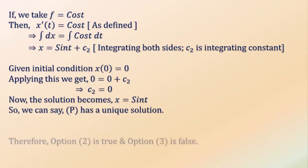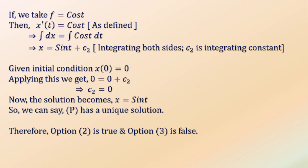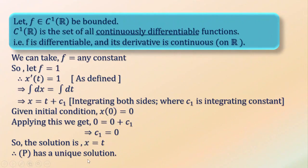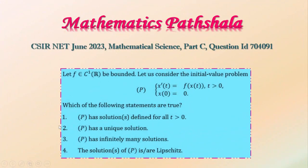So in both examples, P has a unique solution. If P has a unique solution we cannot have infinitely many solutions, so option 2 is right and option 3 is false.